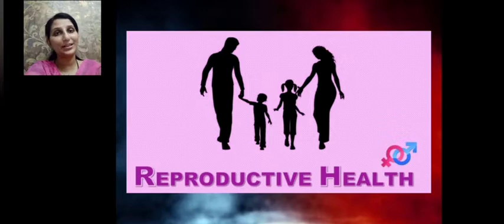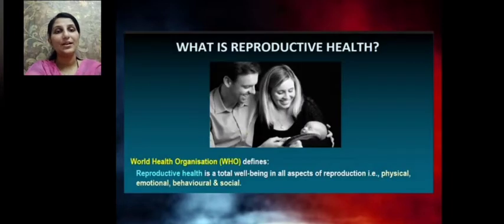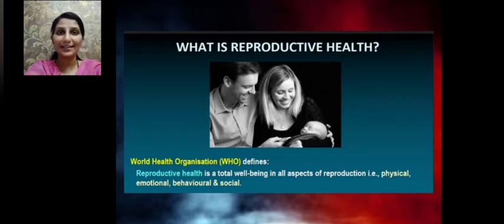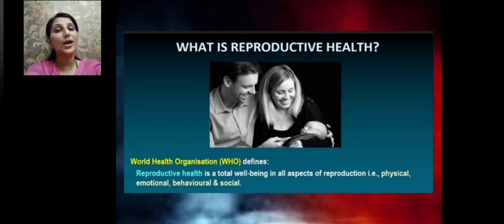So what is reproductive health? Reproductive health, as defined by the World Health Organization, is a total well-being in all aspects of reproduction — that is, the physical aspect, emotional aspect, behavioral and social aspects of the whole process of reproduction.